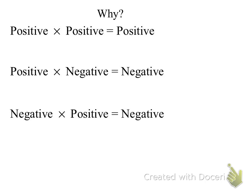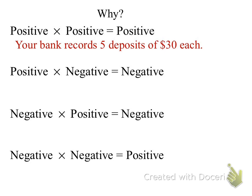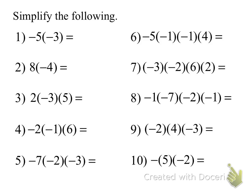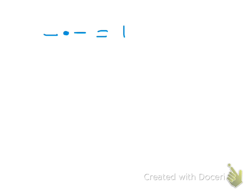So now let's talk about what happens if we have more than one number that we are multiplying together. Let's see if you guys can find a pattern. If I multiply a negative times a negative, what does the answer end up being? It's positive. So every two, we're noticing here, when I multiply a negative times a negative, it's positive.